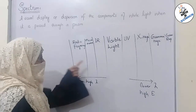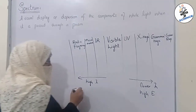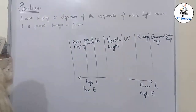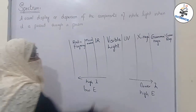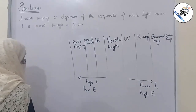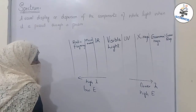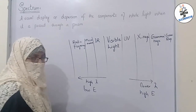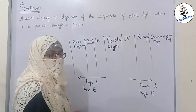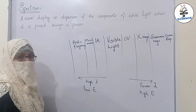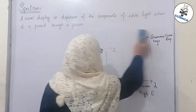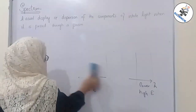Similarly, radiations with high wavelength have low energy values. These are the regions besides the visible region that undergo spectrum. Ordinary white light gives a spectrum that covers all these regions because ordinary white light has radiations of all wavelengths. Now we will discuss its types.